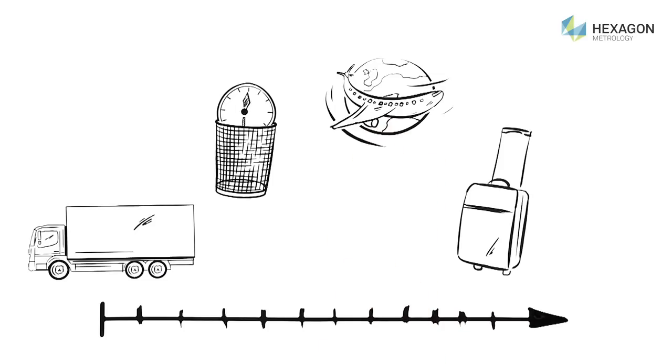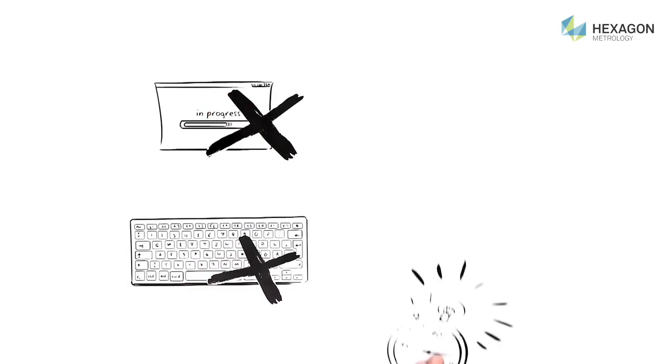Rather than moving the components around a facility, that saves a great deal of time. This is how the new measurement method works. The Romer Absolute Arm does not need to be warmed up or calibrated. It is ready to go immediately.